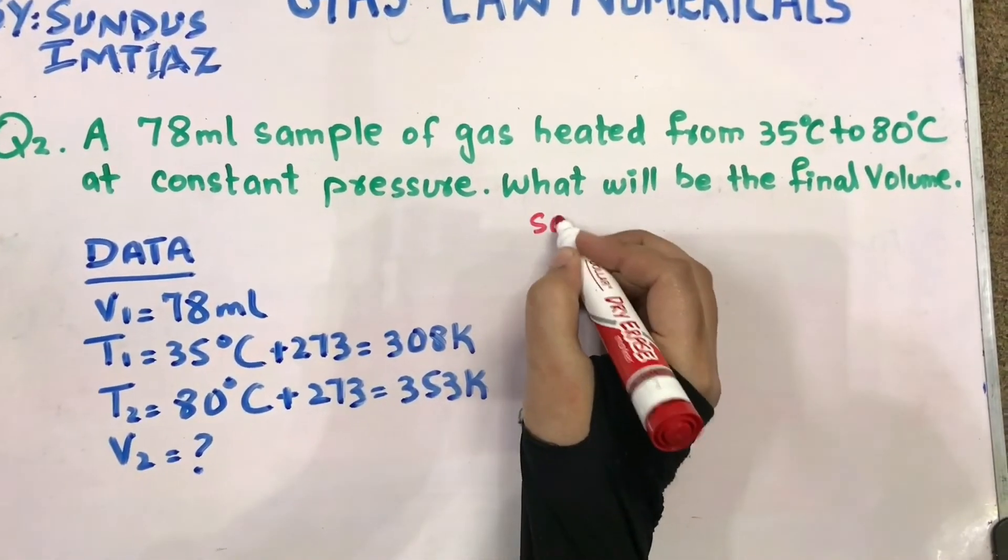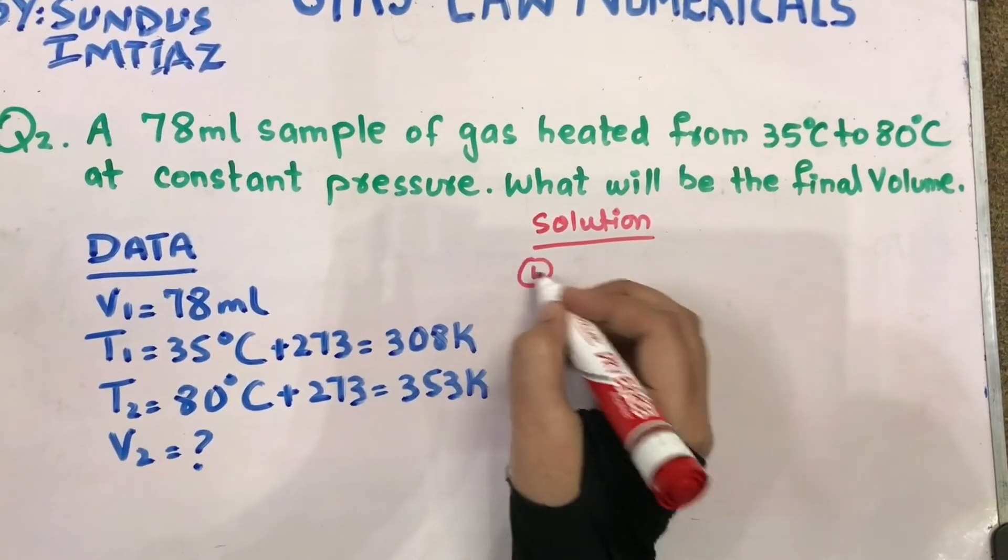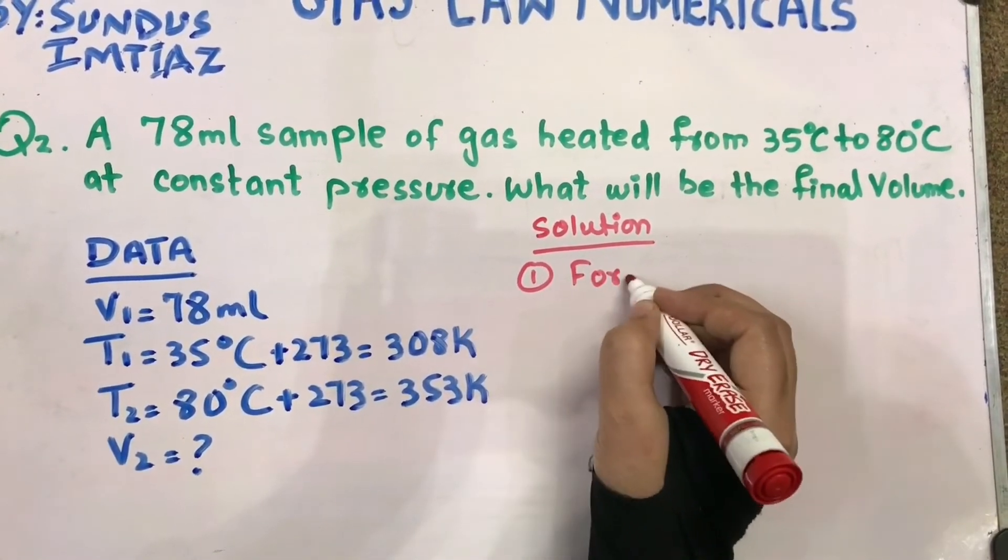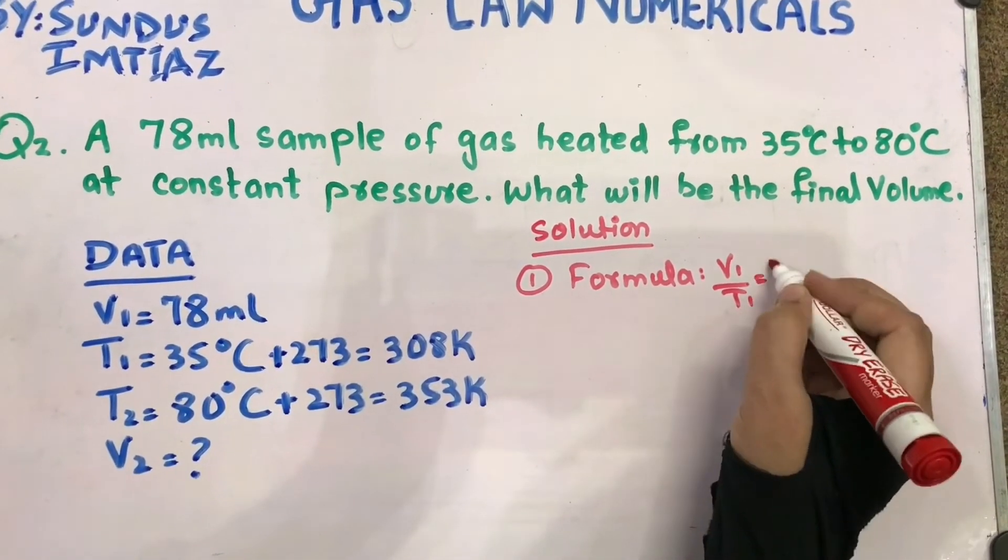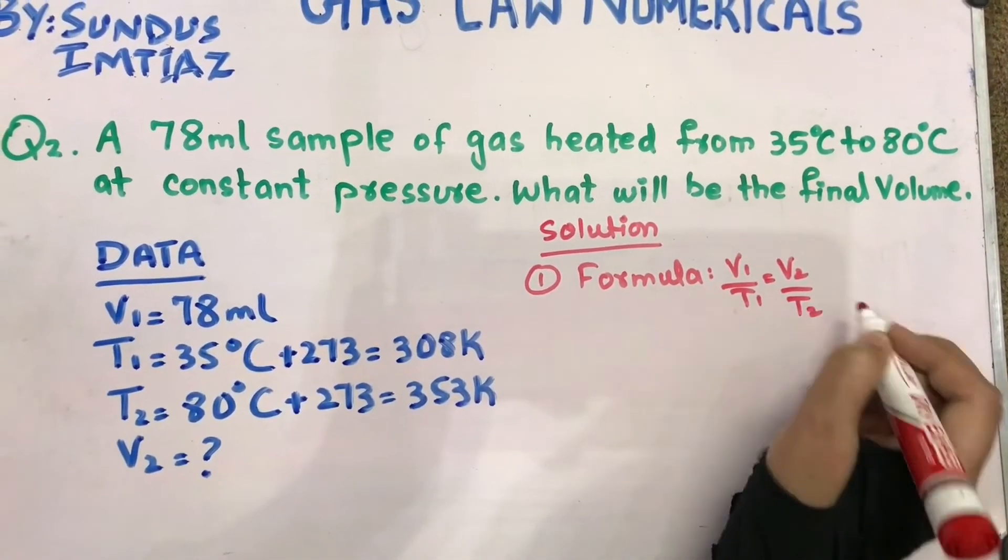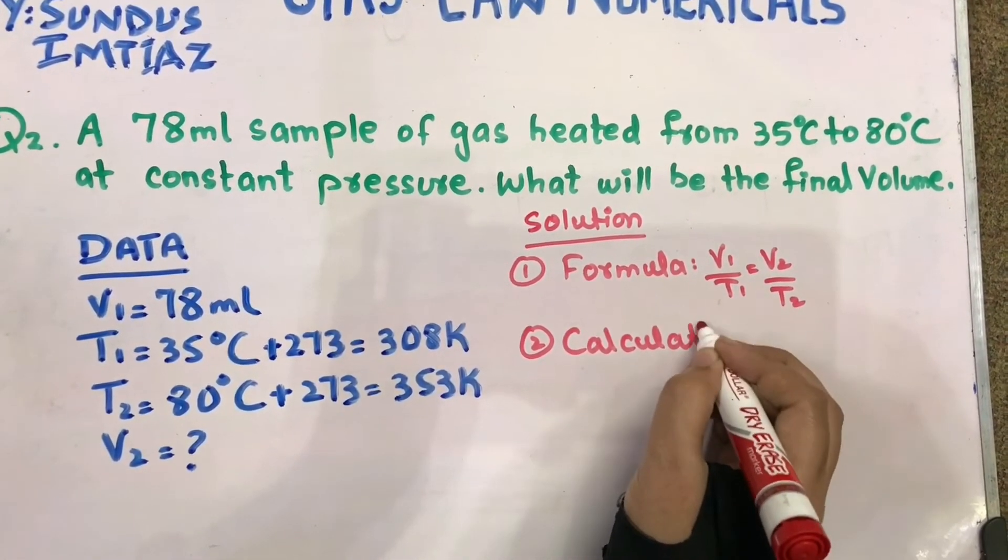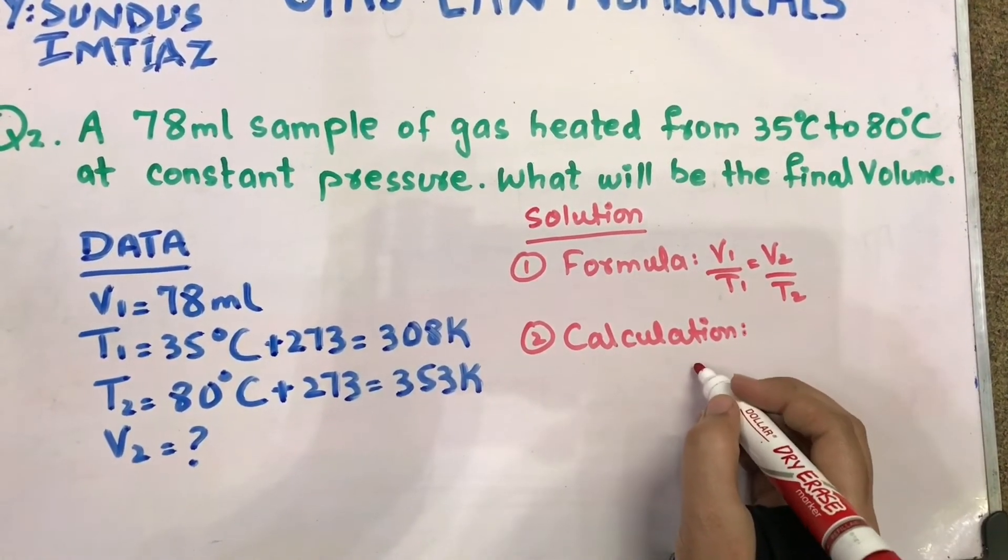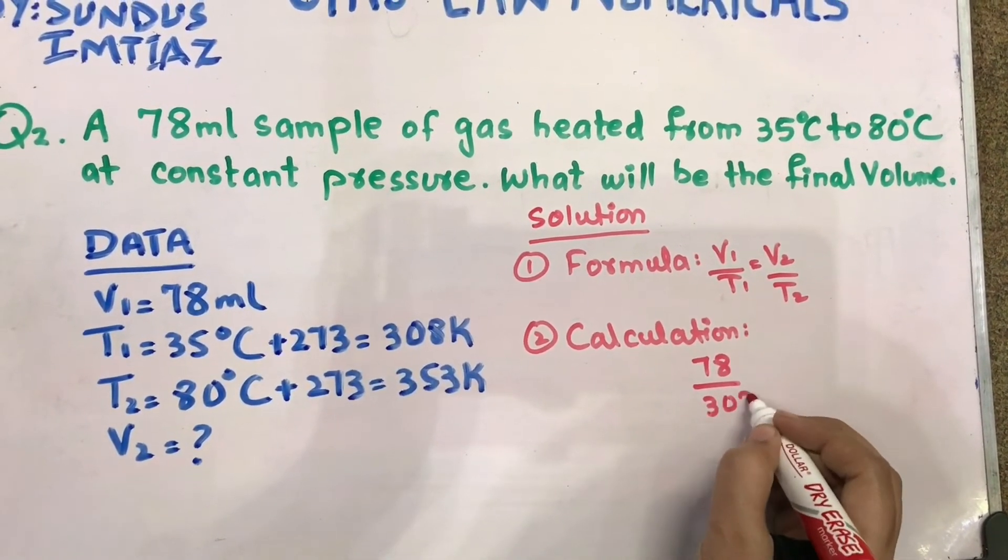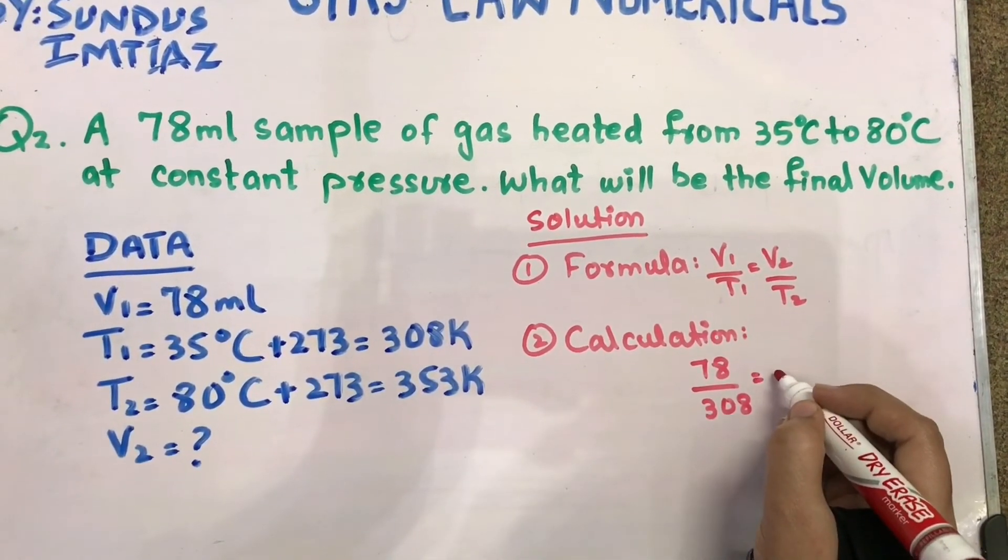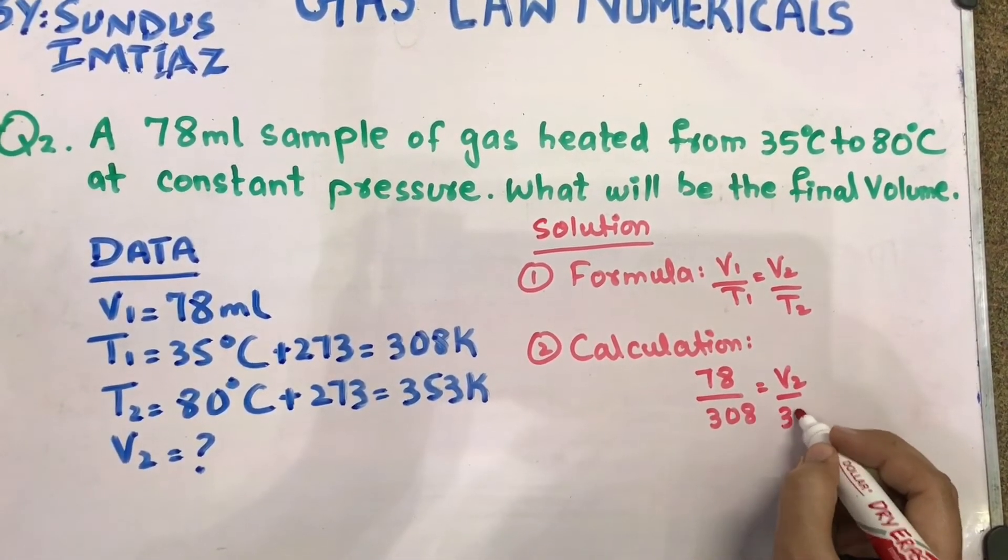Let's solve this numerical. First heading will be the formula, same: V1 upon T1 equals V2 upon T2. In calculation, you have to add V1 that is 78, T1 is 308, V2 is not known so write as is, T2 is 353.